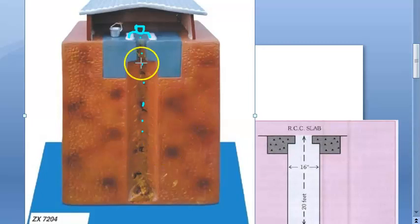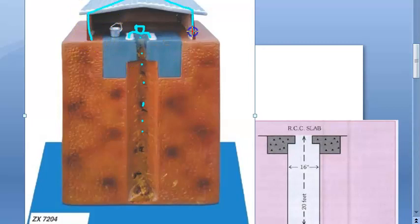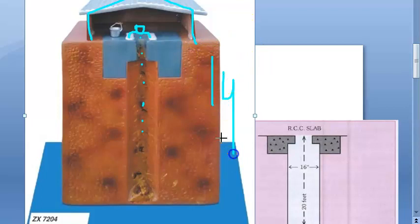A suitable enclosure is put up to provide privacy, as you can see here. For a family of five to six people, a borehole of this description serves well for over a year. The borehole latrine is essentially a family type of installation and is not recommended as a public convenience because of its small capacity.